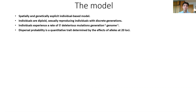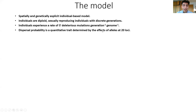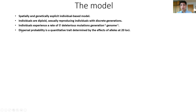It's a genetically and spatially explicit model, meaning that all individuals have a well-defined position in space and their own well-defined genome. These individuals are diploid and sexually reproducing, and they exist in discrete generations where they accumulate mutations. Dispersal between the different patches in the spatial structure of the model is determined by a quantitative trait, so these individuals have genetic variation in the numbers and types of deleterious mutations they contain, and also in the dispersal tendency.